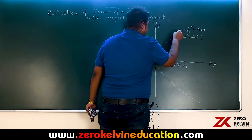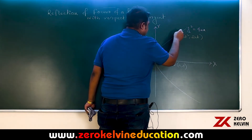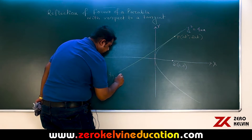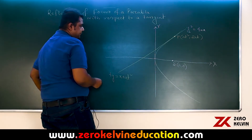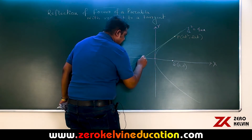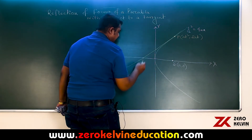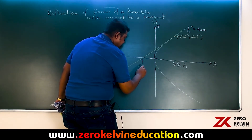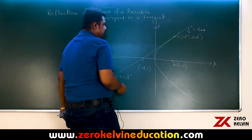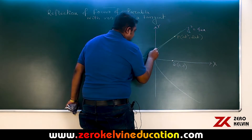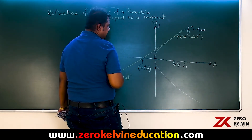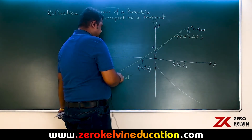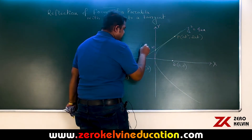If we have the tangent at that very point, the equation of the tangent is ty = x + at², which will meet the axis (that is, the x-axis) at the point T. The coordinate is found by putting y = 0, giving (-at², 0). And the point of intersection with the tangent at vertex is M, found by putting x = 0, giving (0, at).